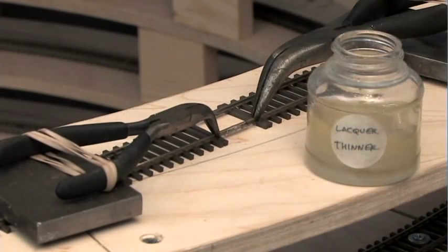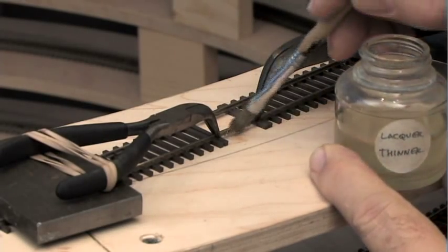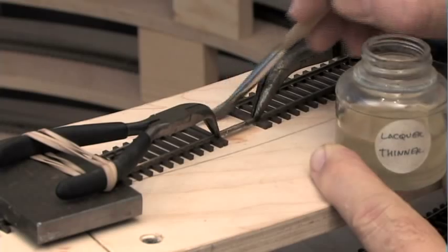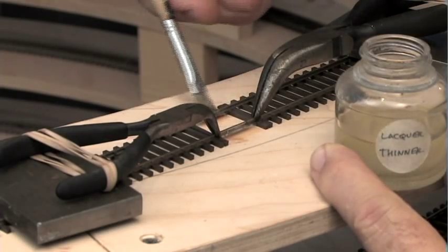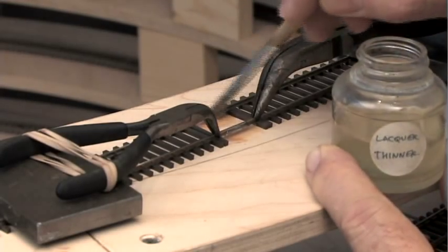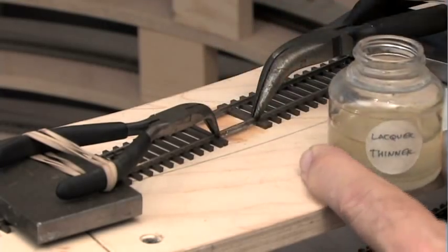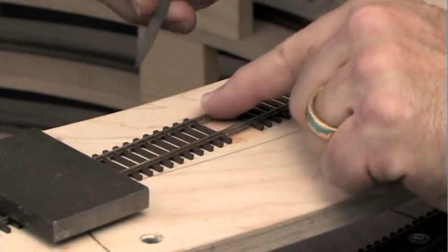A jar of lacquer thinner. Stiff bristle brush. And just swab that across the joints to clean off any flux that may be on any of the surfaces that I'm going to be having locomotive and rolling stock wheels go across.